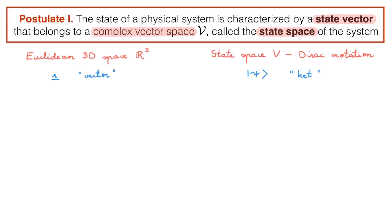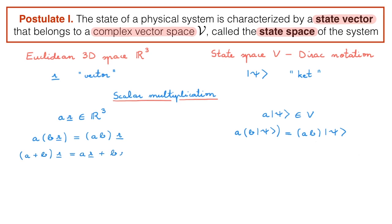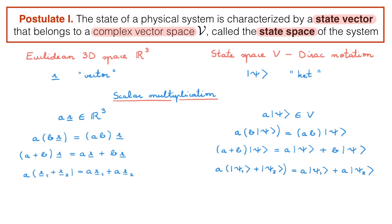The second defining property of vector spaces is scalar multiplication. Scalar multiplication tells us that scalar A multiplied by a vector R gives a result that also belongs to R3, and similarly scalar A multiplied by a ket |ψ⟩ gives a result that also belongs to the state space. Scalar multiplication is associative: A times B times R equals AB times R, and similarly in state space. It is also distributive in scalar sums: (A + B) times R equals AR plus BR, and distributive in vector sums: A times (R1 + R2) equals AR1 plus AR2. Finally, the identity for scalar multiplication is 1, such that 1 times R equals R and 1 times |ψ⟩ equals |ψ⟩.